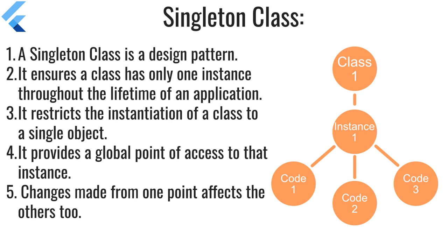The purpose of a singleton class is to manage a single point of control, such as maintaining a global state, configuration settings, or a shared resource, to prevent multiple redundant instances from being created. Singleton classes are particularly useful in scenarios where you want a single, consistent instance to be accessed by various parts of your application.